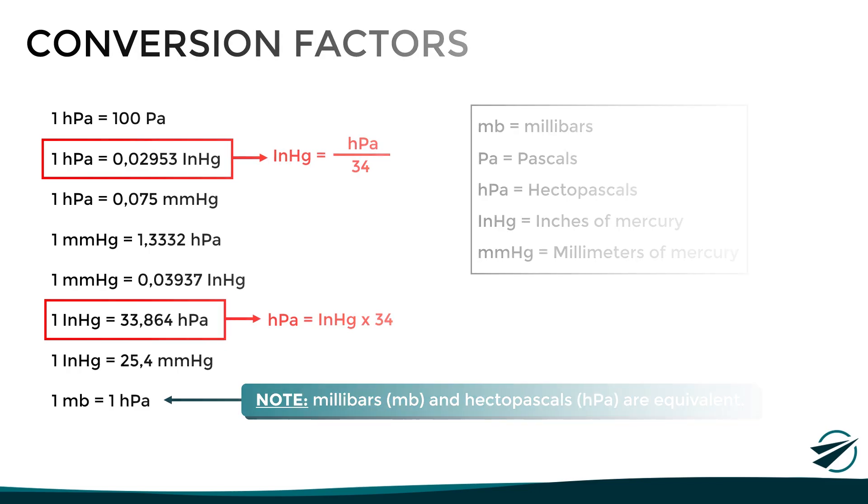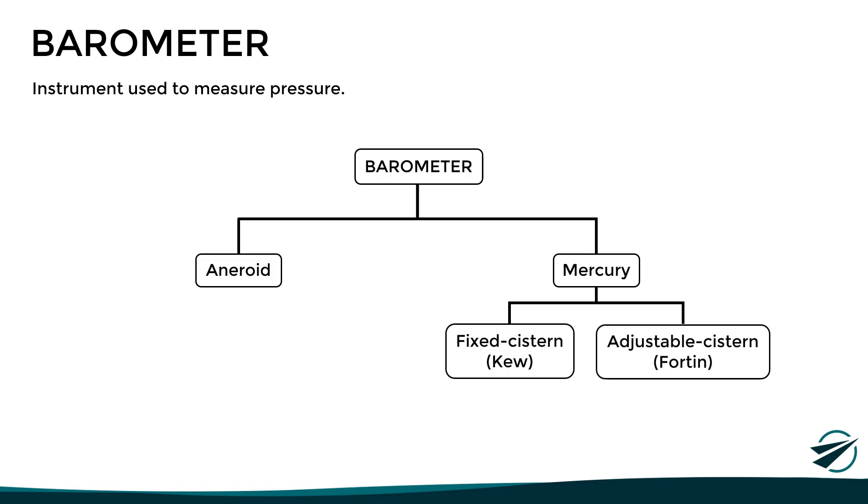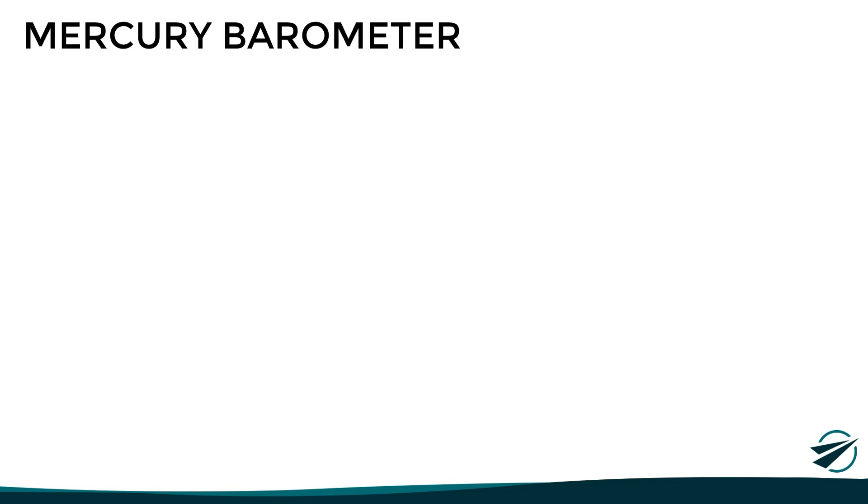So having seen all this, let's move on to the instrument used to measure atmospheric pressure, which is the barometer. However, there are different types of barometers. In fact, we can classify them into two main types, the aneroid and the mercury barometer. This last one is further subdivided into the fixed cistern or Q barometer and the adjustable cistern or fortin barometer. Now, although we will not go into detail on the differences between these two variants of the instrument, let us look at the basic principle of operation of the mercury barometer.